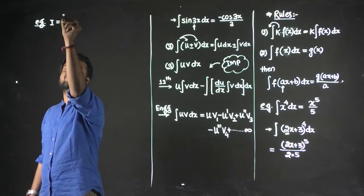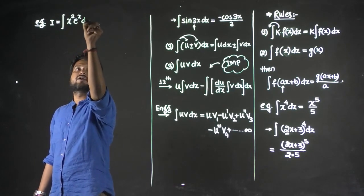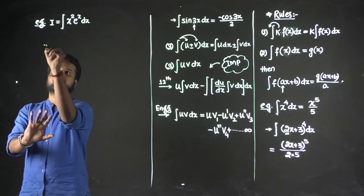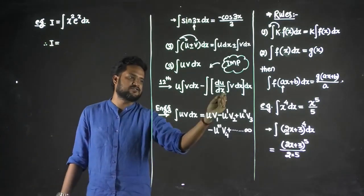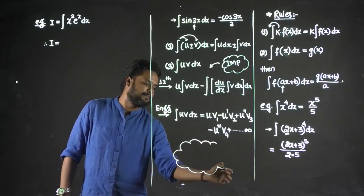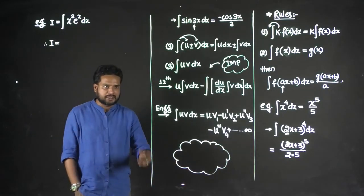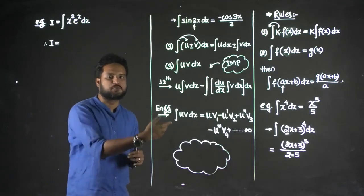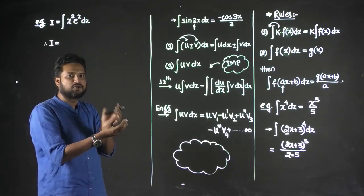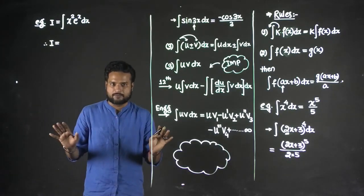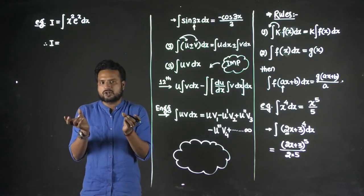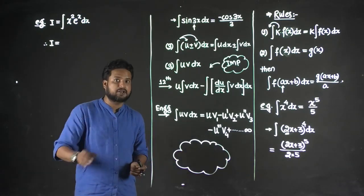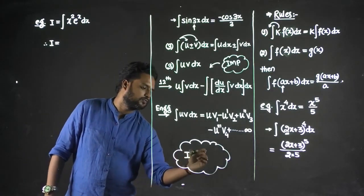Let's take an example: find the integration of x²·eˣ dx. I'll solve it first by the 12th standard formula. One more important thing: in integration by parts, order matters. You must decide which term is u and which is v. There is a rule called ILATE for deciding the order — in derivatives such a rule is not needed, but in integration the order is important.